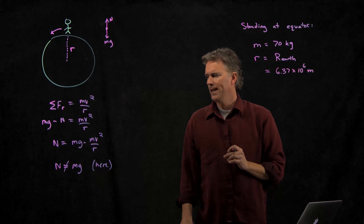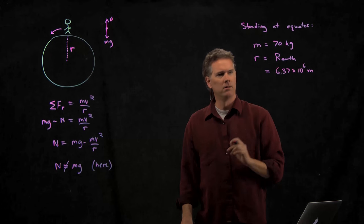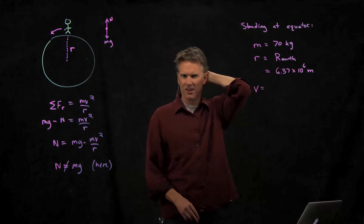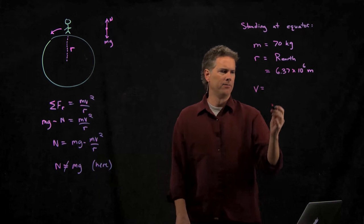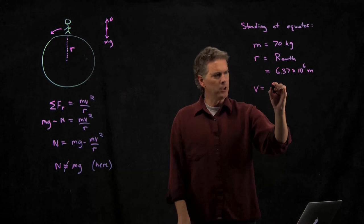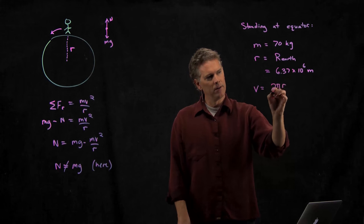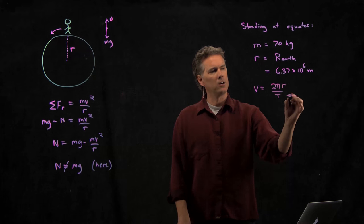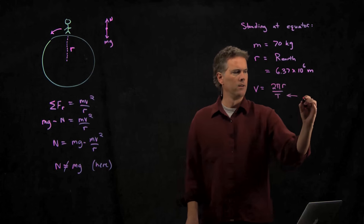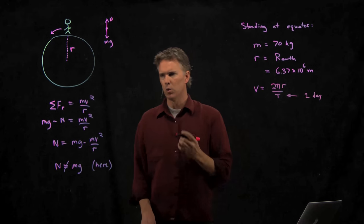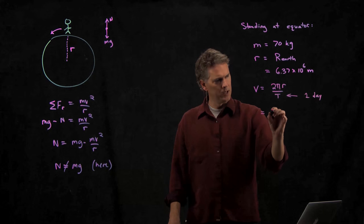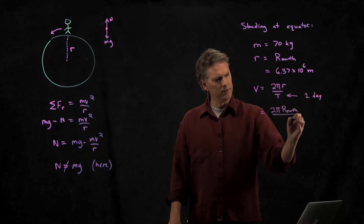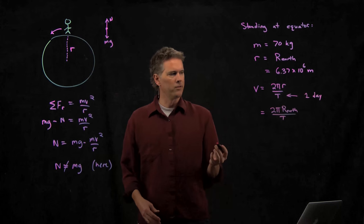What else do we need for this calculation? We need V. How do we get V? Anybody know the velocity that you're moving at if you're at the equator? I don't know. What we do know is that you go once around in how long? How long do you go once around if you're standing at the equator? One day, right? 24 hours. So what does this become?